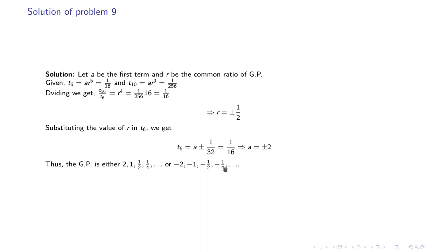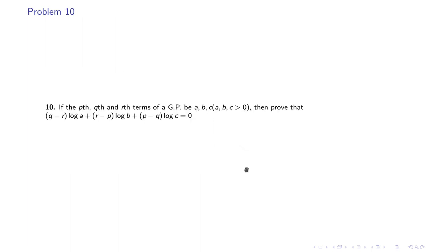Correcting the error: if r is negative and a is negative, say a = -2 and r = -1/2, then the sequence is -2, 1, -1/2, 1/4, -1/8, 1/16, meaning alternate terms are positive. The even-indexed terms are all positive. The slide will be corrected when uploaded to GitHub. Apologies for the mistake.